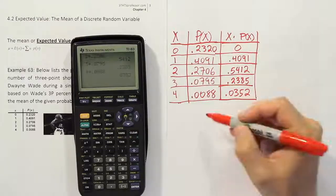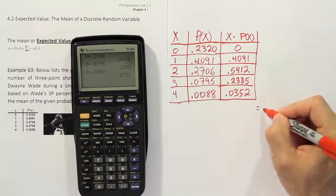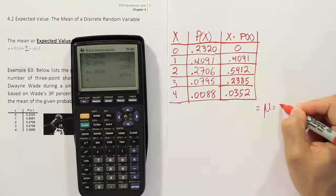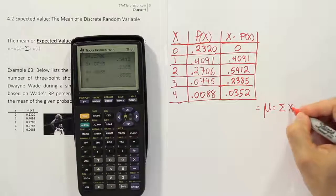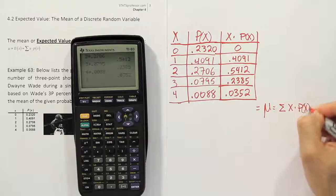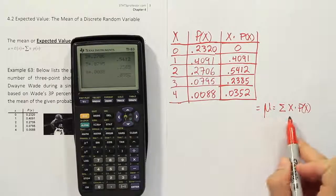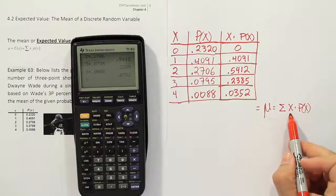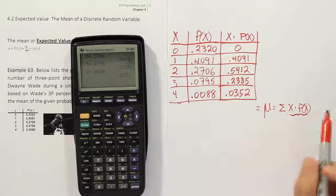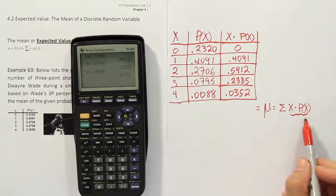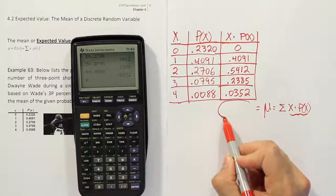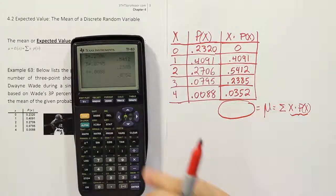And then the last thing we have to do to get the mean is very simple. The mean is simply equal to the sum of the x times p of x column. So this is the formula for the mean. You have to add up the column x times p of x. So this column that we created, we're going to just sum it, and the answer down here will be the mean.